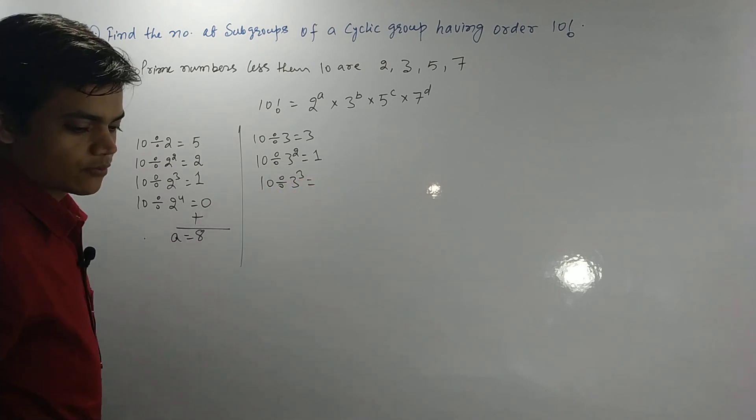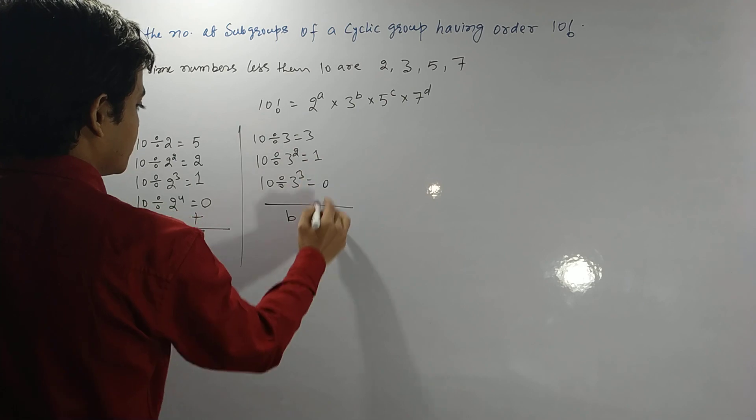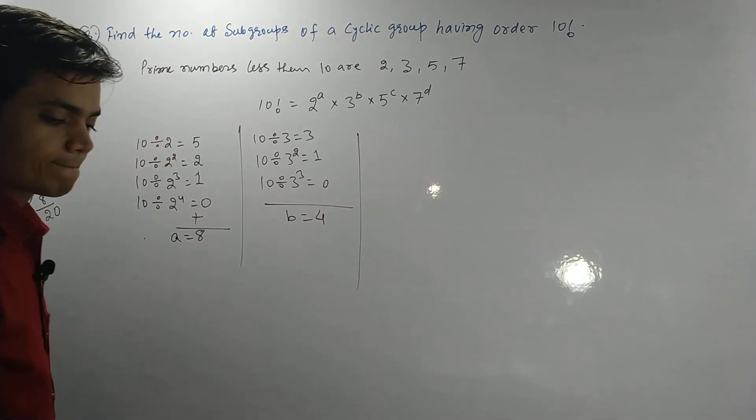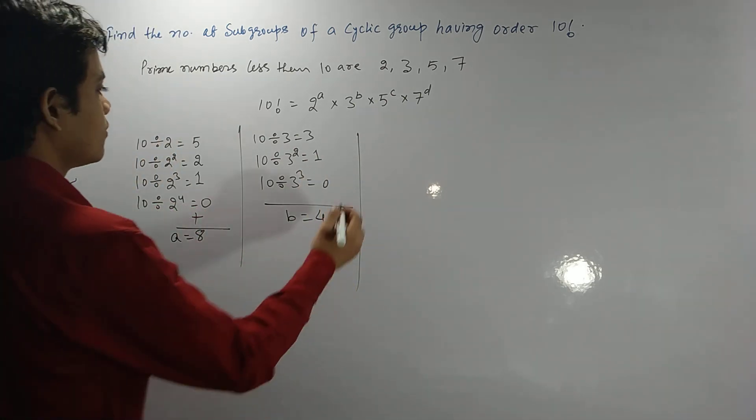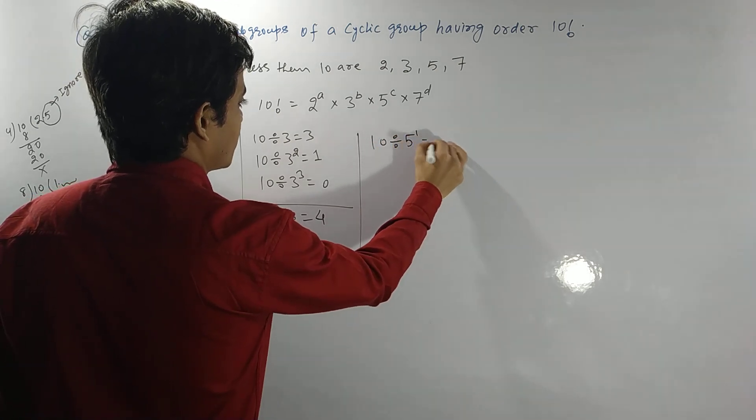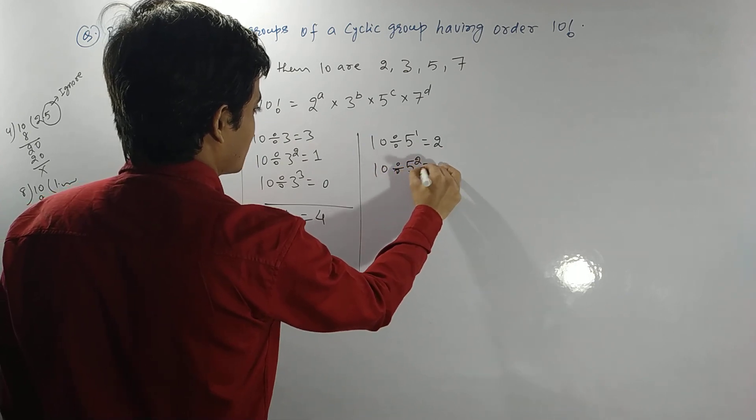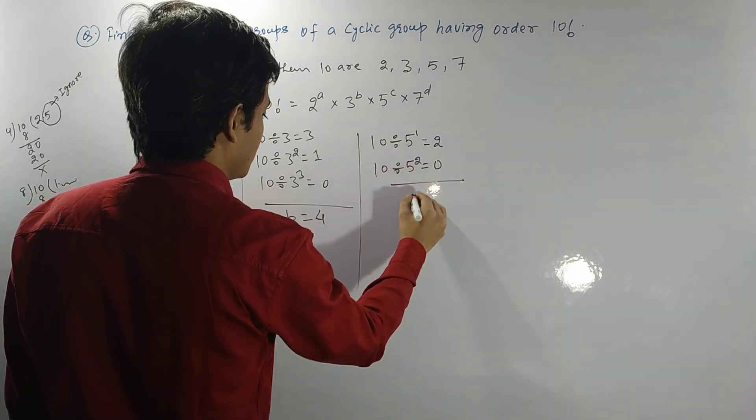Now 10 divided by 5 to the power 1 certainly gives 2. 10 divided by 5 squared gives 0. So certainly this c is 2.